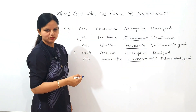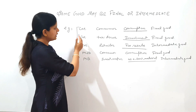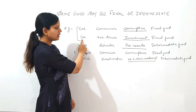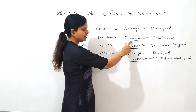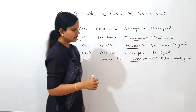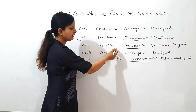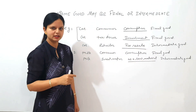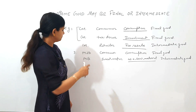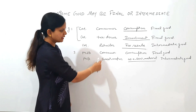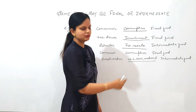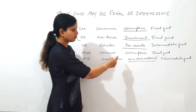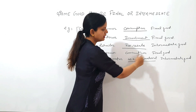For example: if a car is purchased by a consumer for consumption, it is a final good; if purchased by a taxi driver for investment, it is again a final good; but if purchased by a retailer for resale, it is an intermediate good. Another example: if milk is purchased by a consumer for consumption, it is a final good; but if milk is purchased by a sweet maker and used as raw material in making sweets, it is an intermediate good.